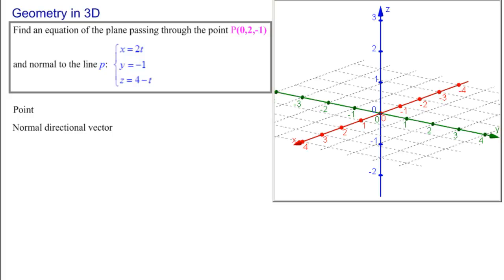Here's our three-dimensional graph. Here is our point P(0, 2, -1).